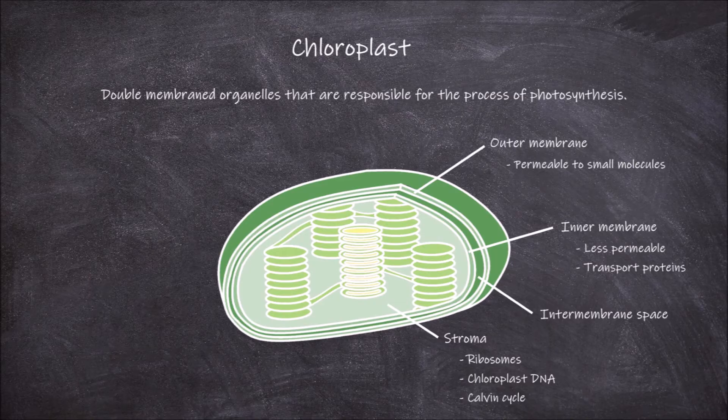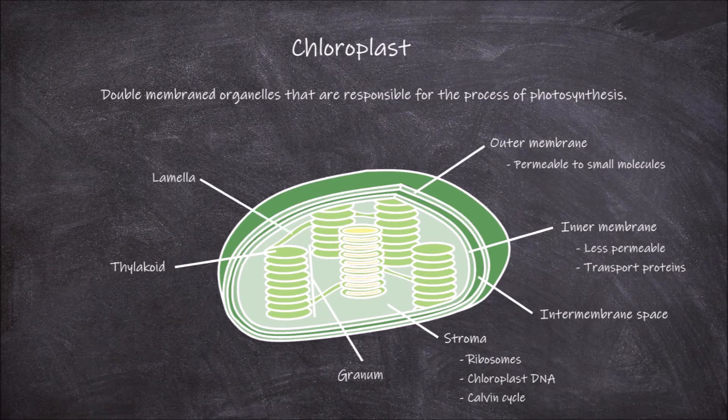Suspended in the stroma is the thylakoid system. This system consists of membranous sacs called thylakoids. They are found in stacks called grana, singular granum. These grana are connected by lamellae. Inside of the thylakoid is called the lumen. Chlorophyll pigments are found in the membrane of the thylakoids, and give the chloroplasts their green colour.